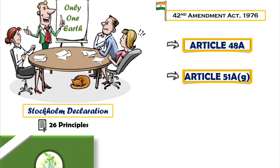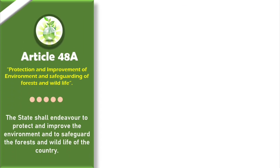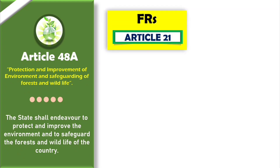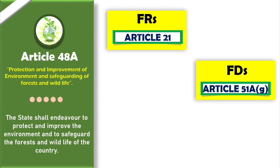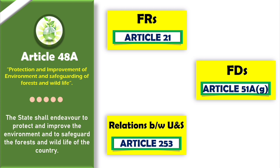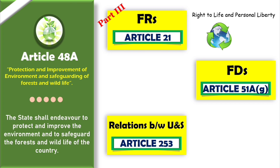Apart from Article 48A, other articles where the protection of the environment has been discussed are Article 21, Article 51A(g), and Article 253. Article 21, which lies under Part 3 of the Indian Constitution as a fundamental right, talks about the right to life and personal liberty. Right to life also includes the right to a pollution-free environment, because Article 21 does not only cover basic living but living in better and dignified conditions.